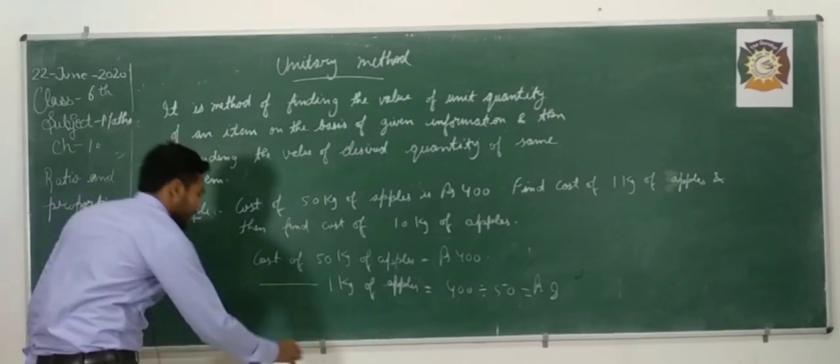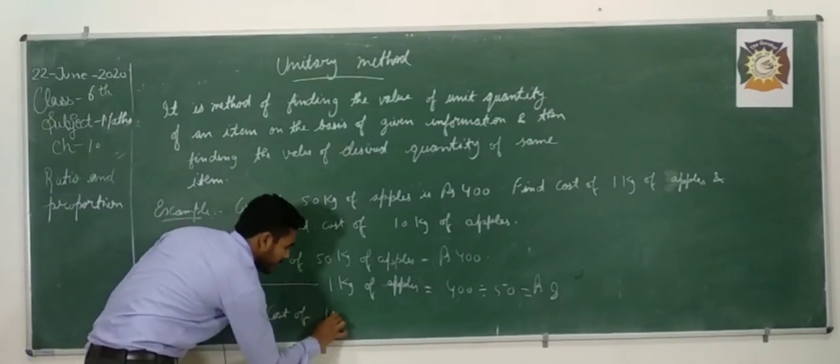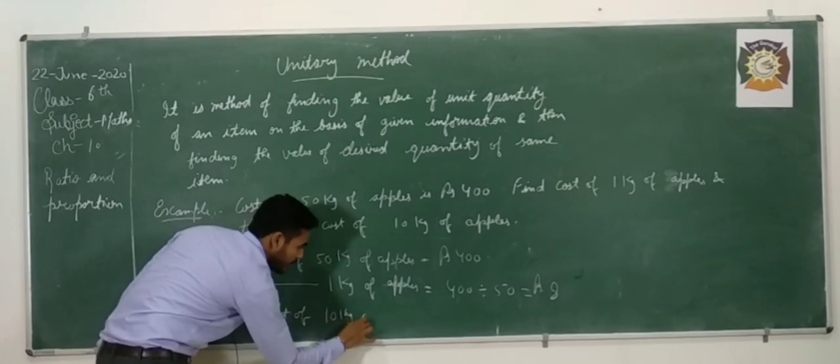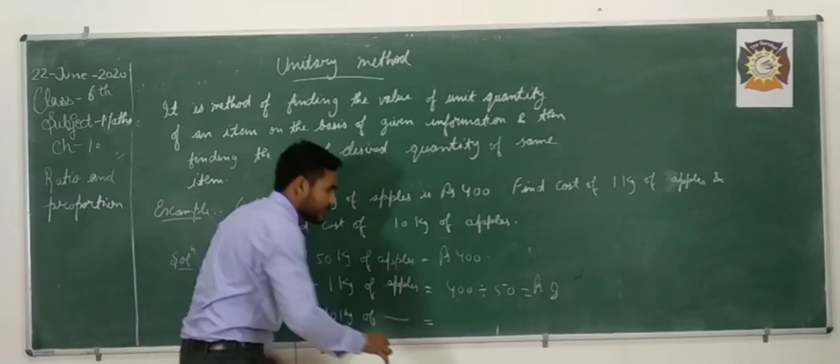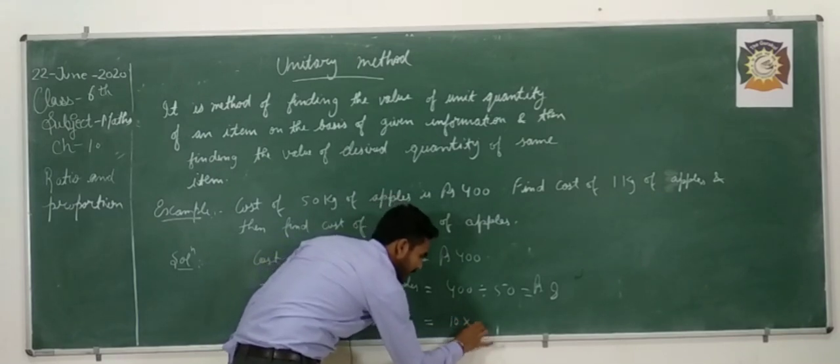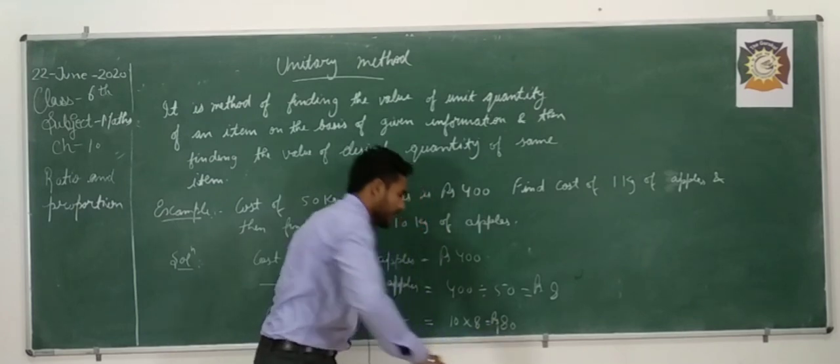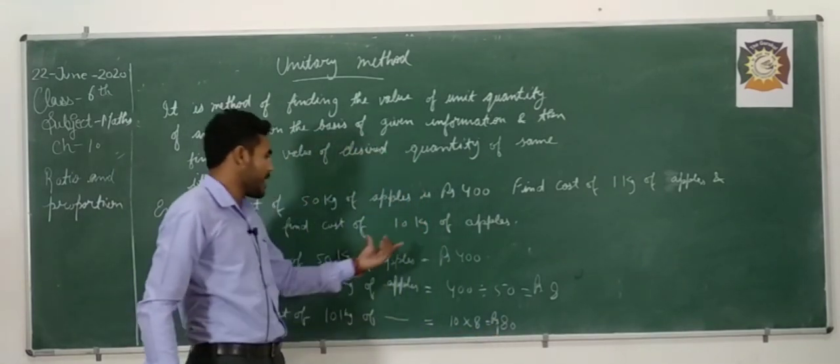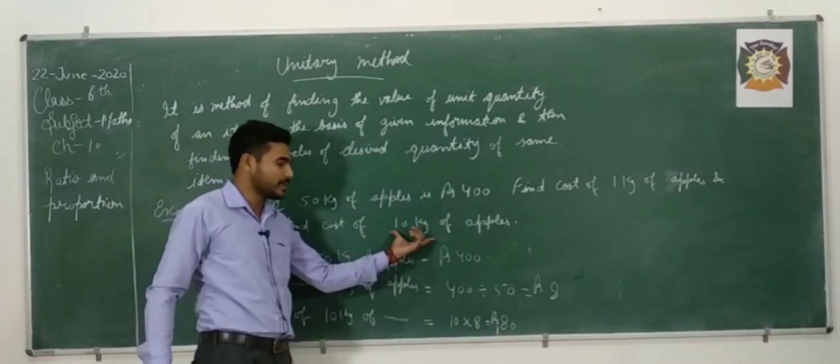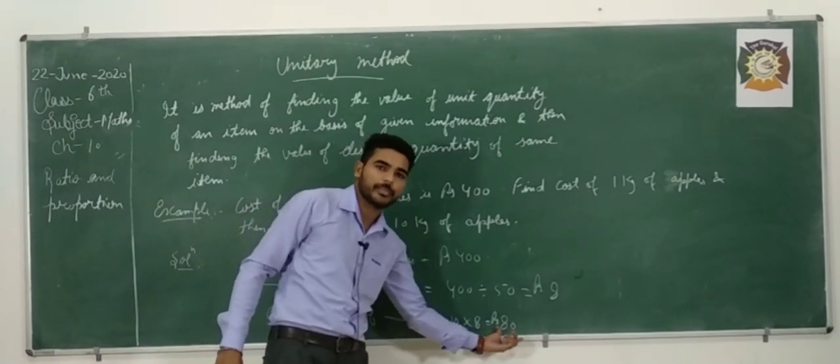It means cost of 1 kg of apples is Rs. 8. And after that we have to find the cost of 10 kg of apples. That is equal to 8 multiplied by 10, that is equal to Rs. 80. It means if we have to purchase 10 kg of apples, we have to give Rs. 80 to the shopkeeper.